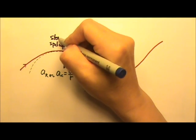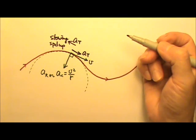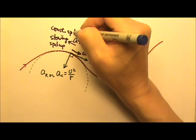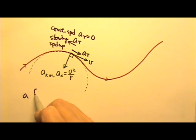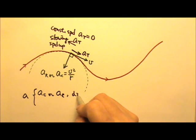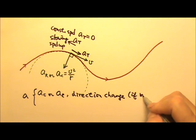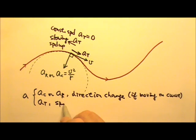If the object is slowing down, the tangential acceleration will be opposite to the direction of the velocity. If the object's speed does not change, then the tangential acceleration would be zero. So an acceleration can have two components: the centripetal or radial acceleration is responsible for the direction change, and the tangential acceleration is responsible for the speed change. If there is a speed change, there is tangential acceleration.